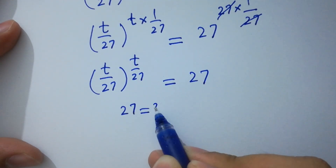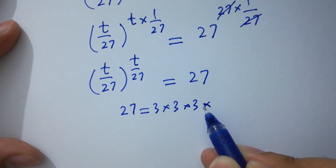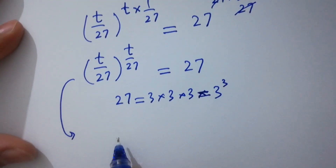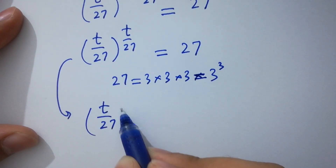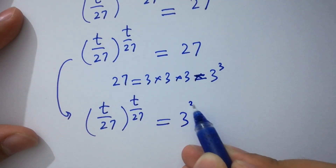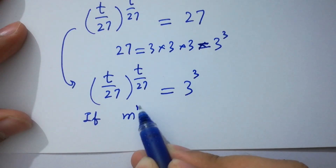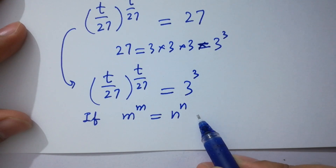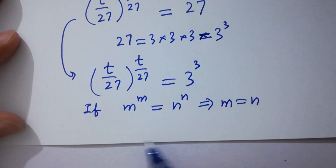Since 27 equals 3 times 3 times 3, which equals 3 cubed, it will be t over 27 to the whole power t over 27 equals 3 cubed. If m to the power m equals n to the power n, then m equals n.